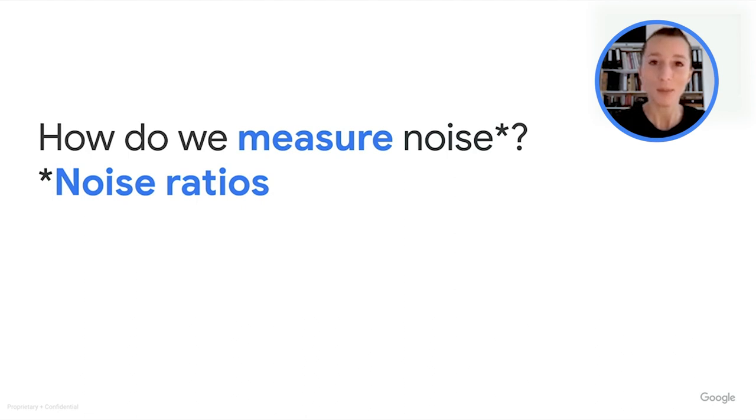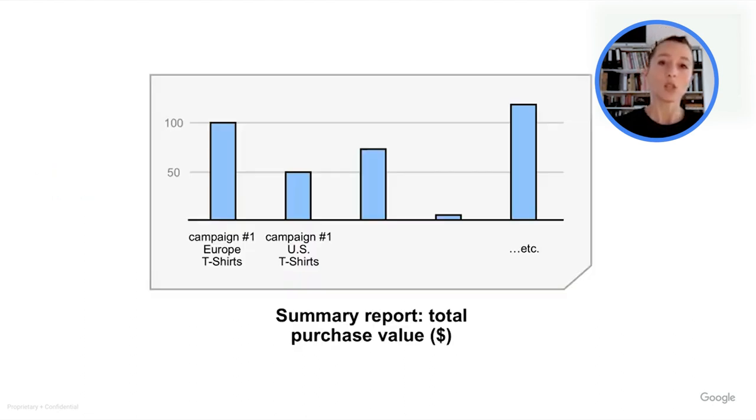Let me give you an example. Let's say you have a summary report that looks like this. This summary report here gives you the total purchase value across campaigns, geographies, and product categories. Now let's zoom in on one entry in this report, namely one entry is one bucket and its value. And by the way, maybe you've seen the term bucket and aggregation key, bucket and aggregation key mean the same thing.